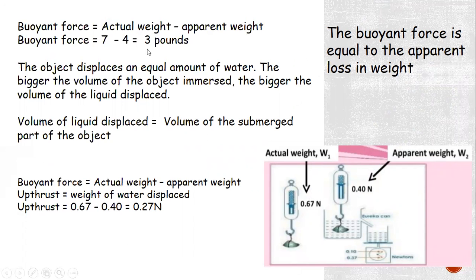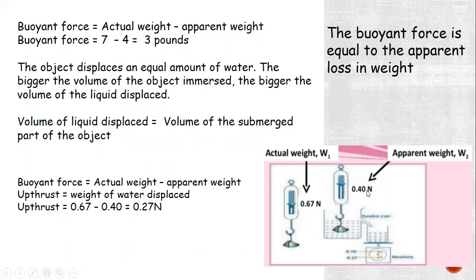The object displaces an equal volume of water. The bigger the volume of the object immersed, the bigger the volume of water displaced — that is why ships with very large volumes displace a large volume of water, while a needle with small volume displaces very little. The volume of liquid displaced is equal to the volume of the submerged part. For example, if the actual weight is 0.67 N and the apparent weight is 0.4 N, then the upthrust is 0.67 minus 0.4, which equals 0.27 Newtons.